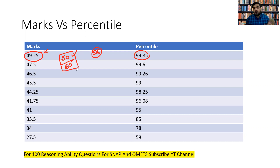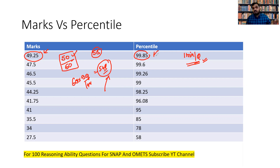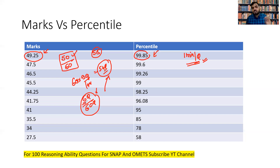To get 50 marks, you need to attempt at least 55 questions. Attempting 90% of the paper means attempting around 54 questions. So you need to attempt more than 90% of the paper in 60 minutes — that's a speed of roughly one minute per question. If you are targeting 99.85 percentile, you have to attempt the complete paper. You only have the option of leaving around six questions out of 60.